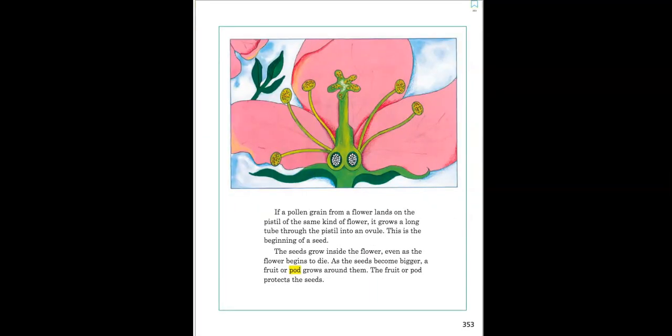If a pollen grain from a flower lands on the pistil of the same kind of flower, it grows a long tube through the pistil into an ovule. This is the beginning of the seed.